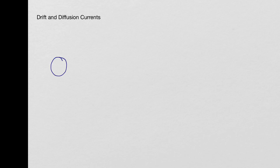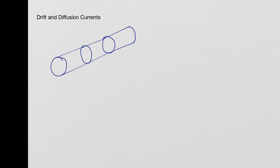Let's take a material which is a cylindrical material, and we'll assume that we have different cross-sections within the material. We will say that the concentration of electrons per centimeter cube is n. So the carriers — electrons here — is n electrons per centimeter cube in this material. Now if you apply a voltage or an electric field, the electron starts moving. Let's assume that the cross-sectional area is A, and the electrons move at a drift velocity Vd centimeters per second.